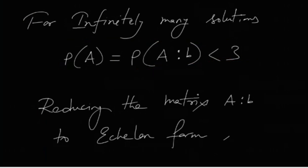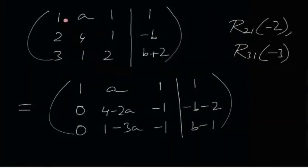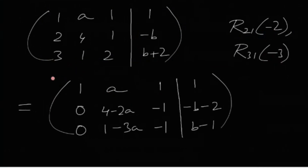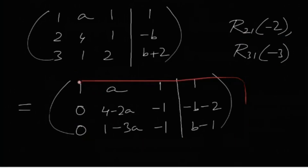Reducing the augmented matrix [A|b] to echelon form: we start with the initial augmented matrix, adjoining the right-hand side vector as the fourth column. We perform two row operations — adding minus two times row one to row two, and adding minus three times row one to row three — to sweep out the first column using the first element as the pivot. We don't actually need to fully convert it to echelon form, as we can solve the problem even before doing that.